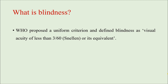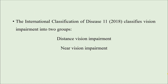The criteria to define blindness was given by the World Health Organization. Blindness is defined as visual acuity of less than 3/60 on the Snellen chart, or its equivalent. If we use the Snellen chart, the visual acuity has to be worse than 3/60. We can also use any other chart equivalent to the Snellen chart, with a corresponding cutoff value.